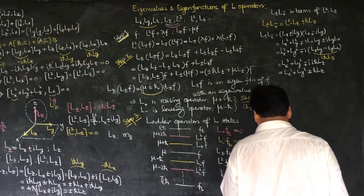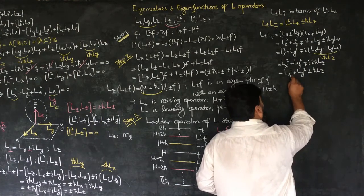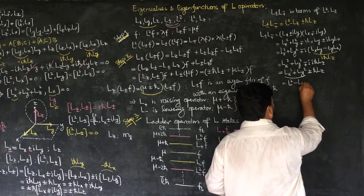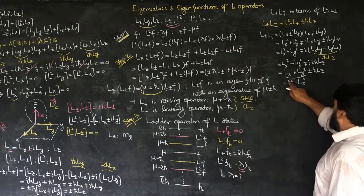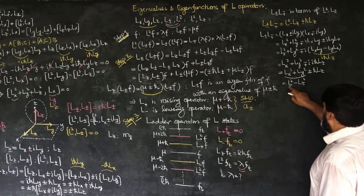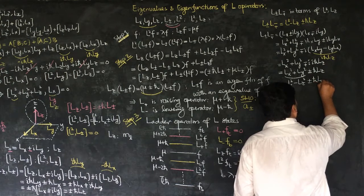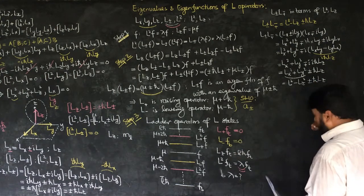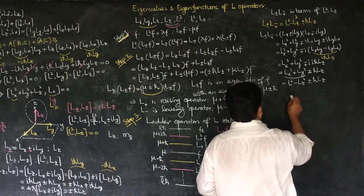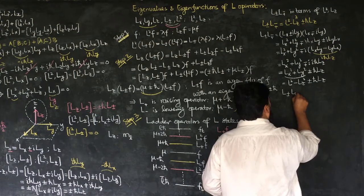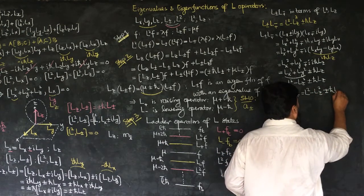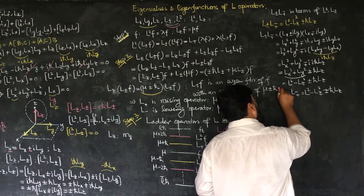Now, writing this in terms of L²: since L² equals Lx² + Ly² + Lz², we can replace Lx² + Ly² with L² - Lz². Therefore, L+∓L-± equals L² - Lz² plus-minus ℏLz, which is the required relation.